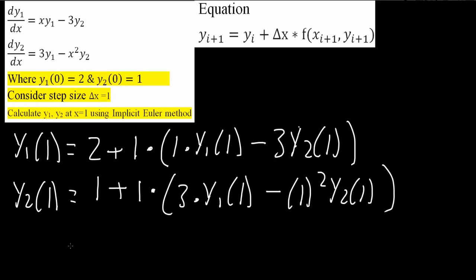I will write down the answer here also. So y1 parenthesis 1 is equal to 1 over 9. And y2 parenthesis 1 is equal to 2 over 3.